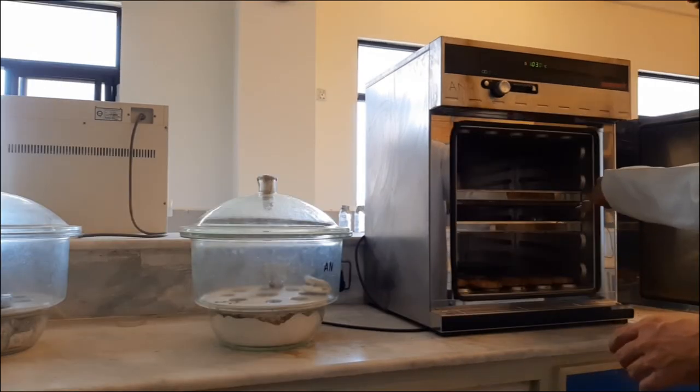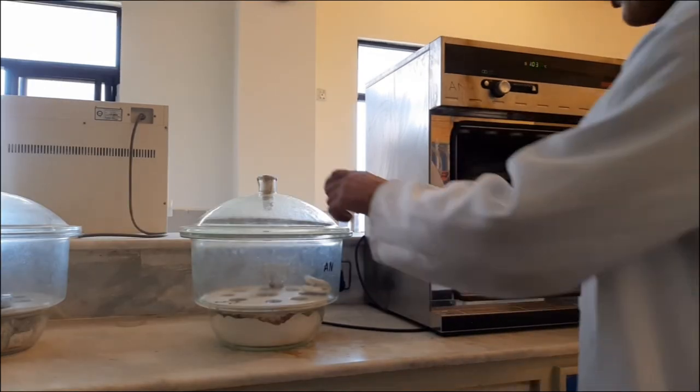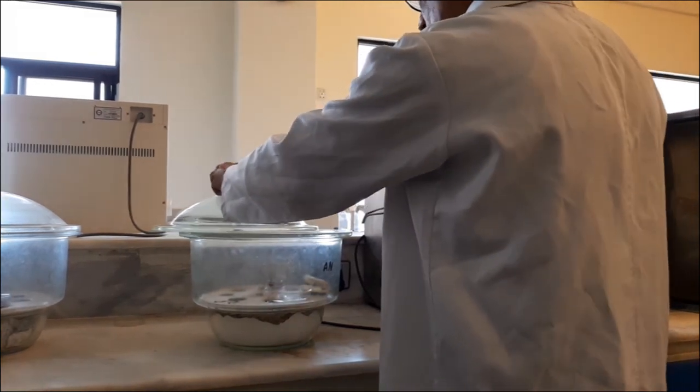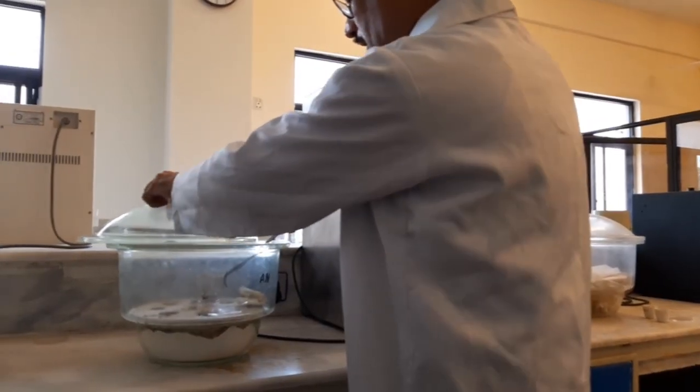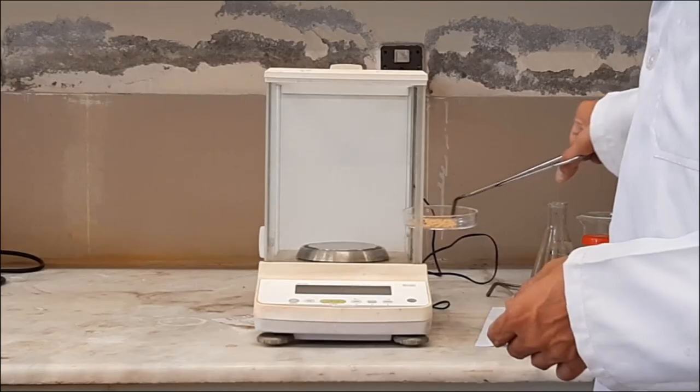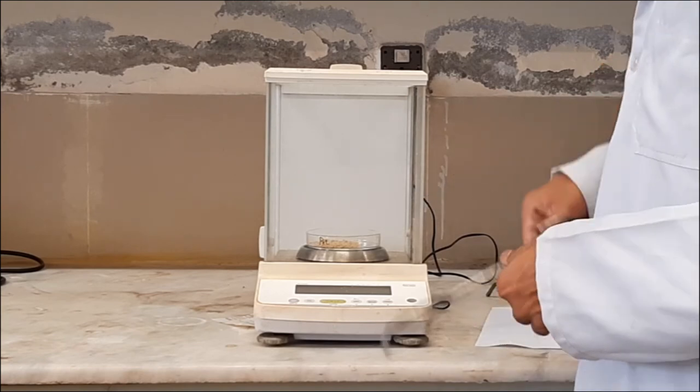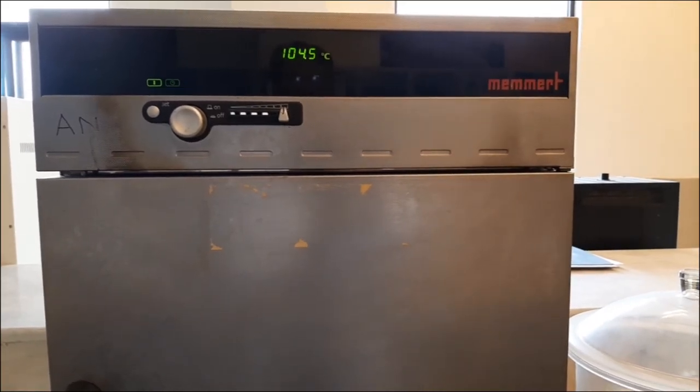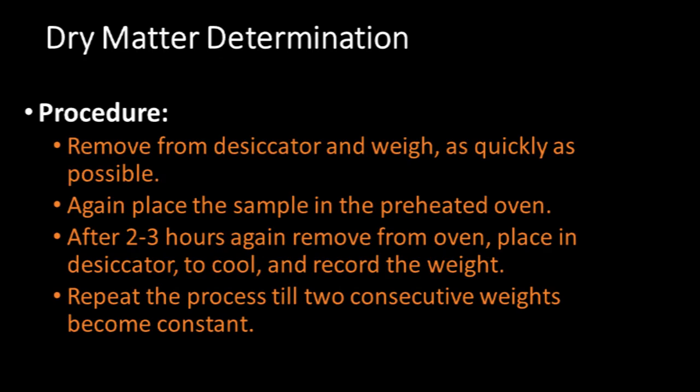Then remove from the oven and place in the desiccator to cool for 30 to 40 minutes. Remove it from the desiccator and weigh as quickly as possible. Again place the sample along with the petri dish in the oven and wait for a minimum of three hours. Remove from the oven, place in the desiccator to cool, and record the weight. Repeat the process till last two consecutive readings become constant.